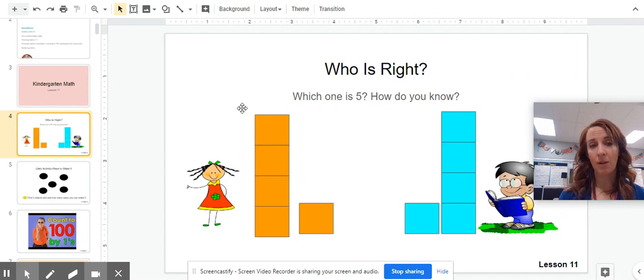If you notice that the orange blocks were a group of five because they had four and one more, then you are correct. If you also notice that the blue blocks had one and then four more to make five, then you are correct as well and both students were able to make five.